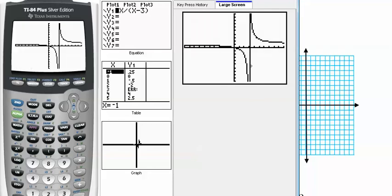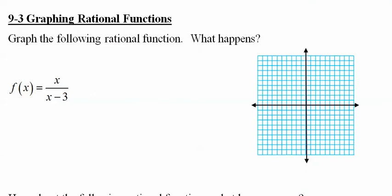Notice that it comes down and there's something vertical here. It's not actually part of the graph, that's something else. That's called an asymptote and I can tell you right now it's at x equals 3.